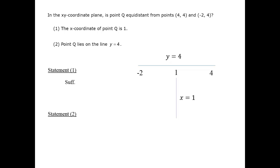Statement 2 describes the first case that we thought of, the point at 1, 4, but it doesn't tell us the x-coordinate. The point could be equidistant from the other two, or it could be quite close to one of the points, for example.